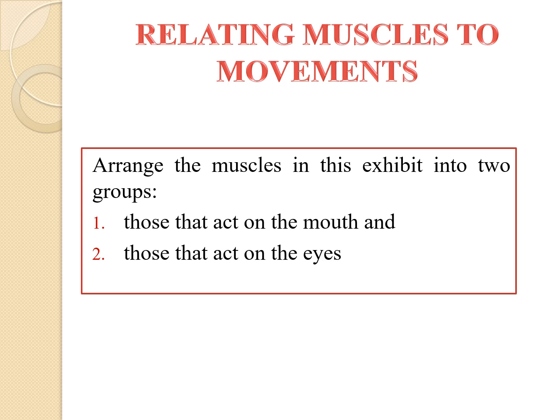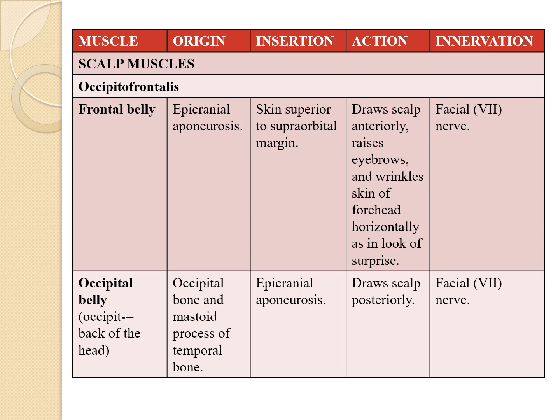Now let us discuss each muscle governing facial expressions. The muscles are arranged in two groups: muscles that act on the mouth and muscles that act on the eyes. For each muscle, we will cover the origin, insertion, action, and innervation — that is, which nerve innervates that particular muscle.